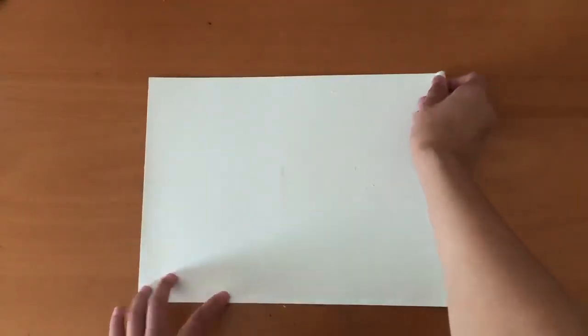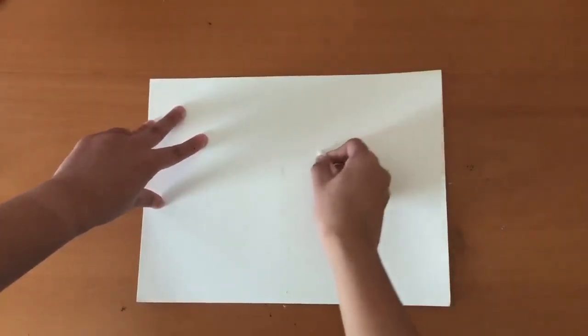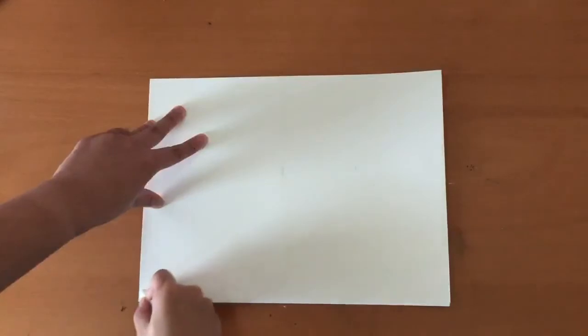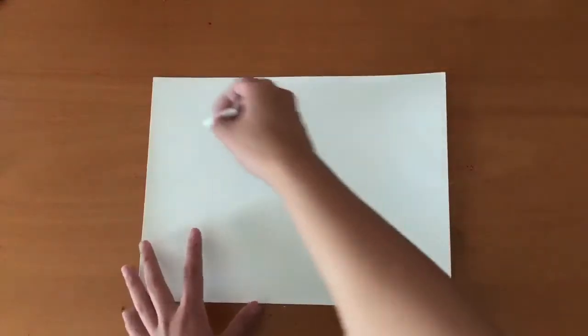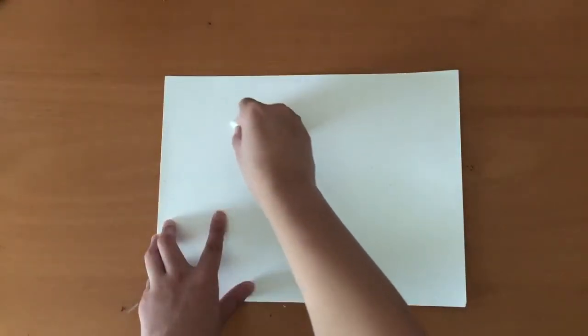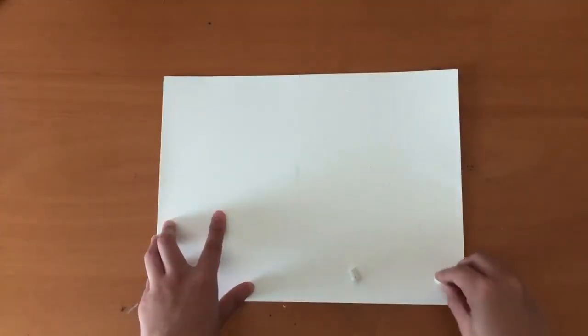Now, we are going to draw two diagonal lines across the paper. So we're going to start from the top right hand corner and draw a line all the way down to the bottom left hand corner. We're going to do the same thing on the other side from the top left down to the bottom right. Please pause the video now.